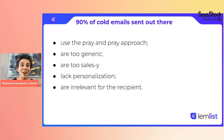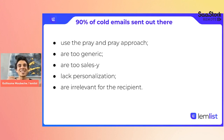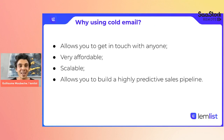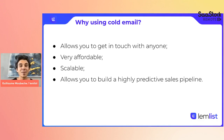Cold email is basically reaching out to people you don't know. The reason why most of the time it doesn't work is because people use what we call the spray and pray approach — essentially sending thousands of messages to people they don't know with a pitch just talking about themselves. They lack personalization. They just add the first name, hoping for responses. But that doesn't work. However, when you use cold email the right way, you can get in touch with anyone. It's affordable, scalable, and allows you to build a predictable sales pipeline.